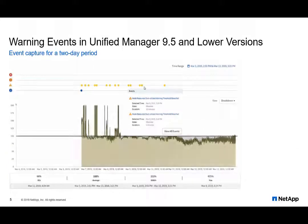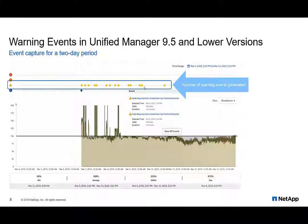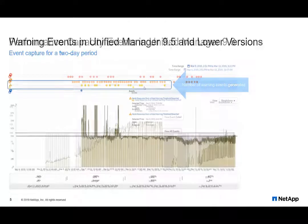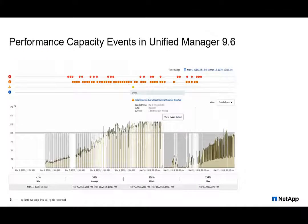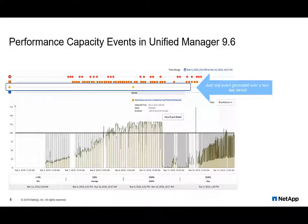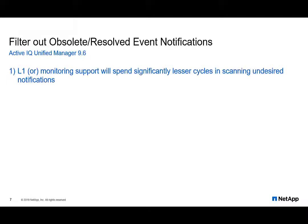For demonstration purposes, let's look at the number of critical events for a node in Unified Manager 9.5, which is significantly higher than Unified Manager 9.6 monitoring the same node and workload for the same time range. We see only one event generated for that time frame. Active IQ Unified Manager 9.6 uses the extra time to calculate threshold breaches for performance capacity events. This will immensely help in reducing performance event noise significantly.